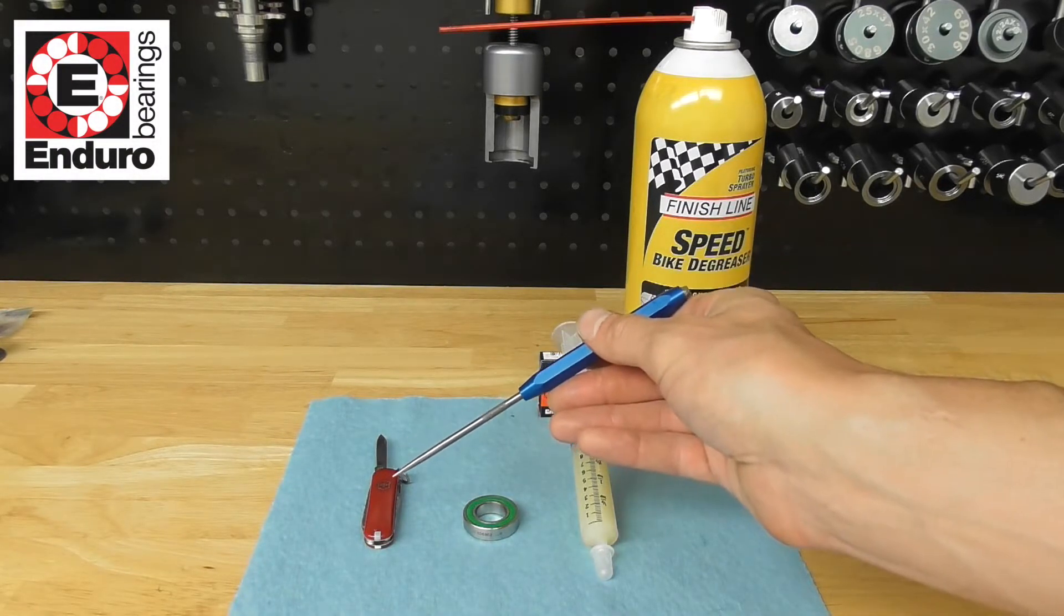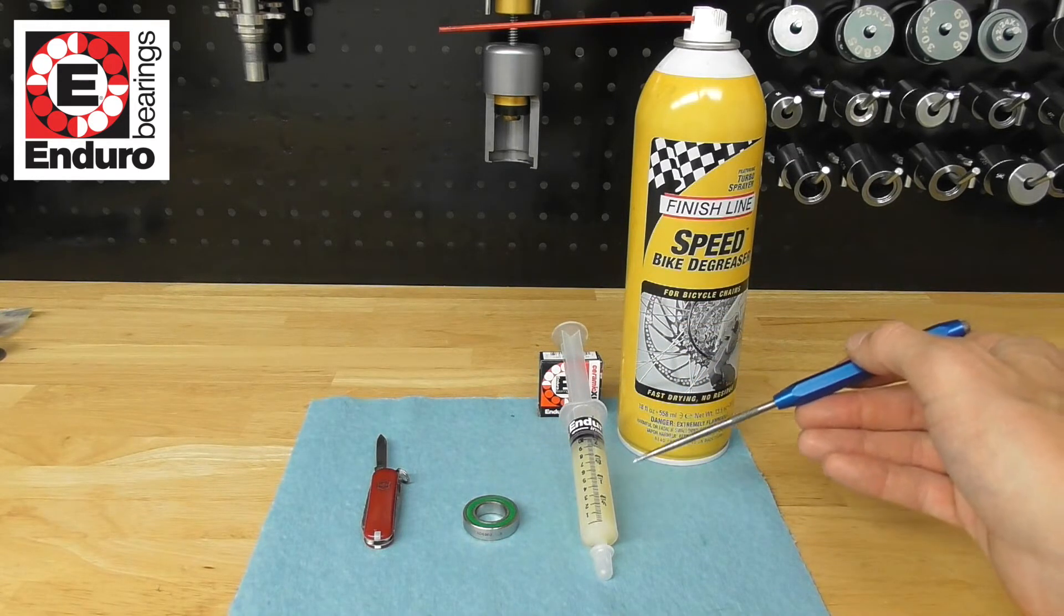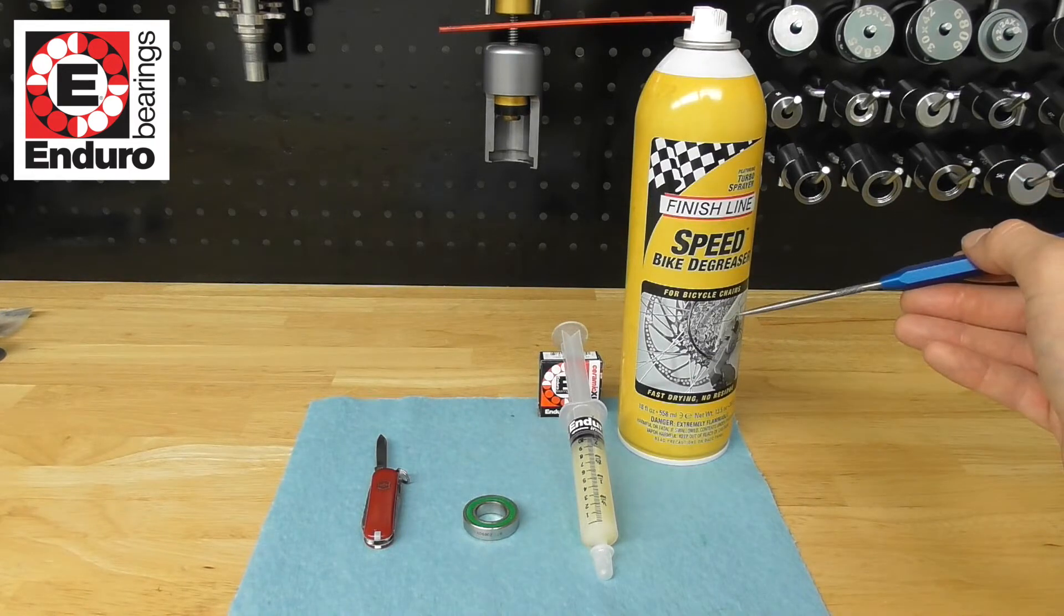Small Swiss Army knife, a sealed cartridge radial bearing, grease syringe, and a degreaser.